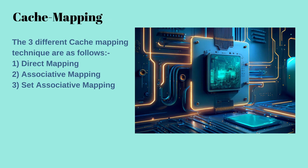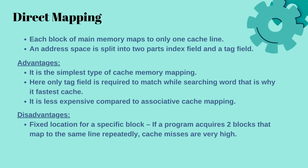Now let us see the different techniques used for mapping. There are three different techniques of mapping used for cache memory: direct mapping, associative mapping, and set associative mapping. Direct mapping is the simplest technique, which maps each main memory block to only one possible cache line. It is the simplest type of cache memory mapping. Here only the tag field is required to match while searching, which is why it is the fastest cache. It is less expensive compared to associative cache mapping. The disadvantage is that it has a fixed location for a specific block — if a program acquires two blocks that map to the same line repeatedly, cache misses are very high.